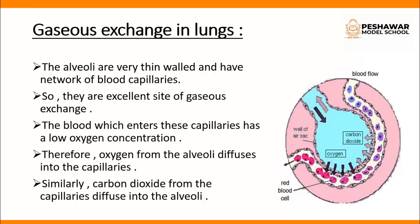The alveoli are very thin-walled and have a network of blood capillaries, making them an excellent site of gaseous exchange. The blood entering these capillaries has a low oxygen concentration, so oxygen from the alveoli diffuses into the capillaries. Similarly, carbon dioxide from the capillaries diffuses into the alveoli. The blood coming towards the alveoli is deoxygenated blood due to the presence of carbon dioxide, and when it leaves the alveoli it becomes oxygenated blood because it has absorbed oxygen from the alveoli.